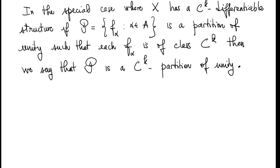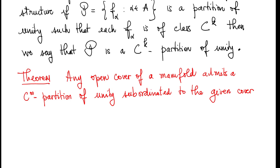It is worth noting that in the special case where X has a C^k differentiable structure, if P is a partition of unity such that each element f_alpha is of class C^k, then we say that P is a C^k partition of unity. Our main result in this lesson is the following theorem: any open cover of the manifold admits a smooth partition of unity subordinate to the given cover.